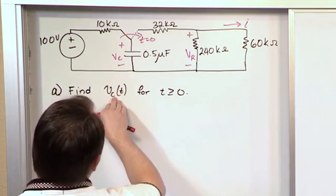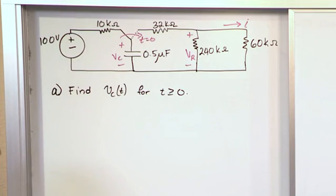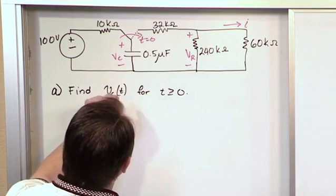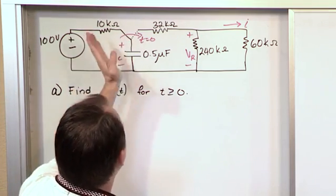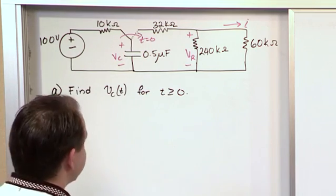So in order to find this, there's really two things you need to know. The first one is, what is the initial value across this capacitor right before the switch moves? And that's what we're going to focus on first.